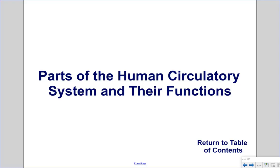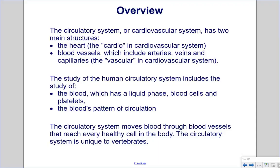The circulatory system, or cardiovascular system, has two main structures: the heart, which is the 'cardio' in cardiovascular, and the blood vessels, which include arteries, veins, and capillaries — the 'vascular' in cardiovascular. The study of the human circulatory system also includes the blood, which has a liquid phase, blood cells, and platelets, and the blood's pattern of circulation. The circulatory system moves blood through blood vessels that reach every healthy cell in the body, and is unique to vertebrates.